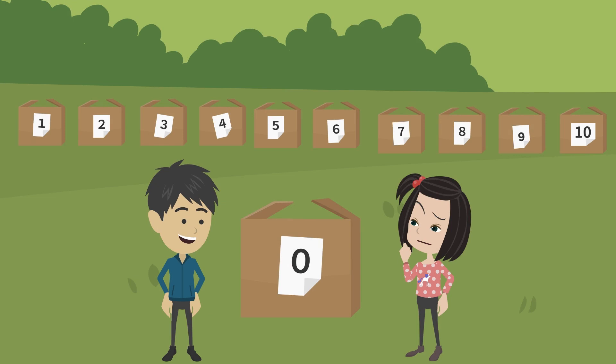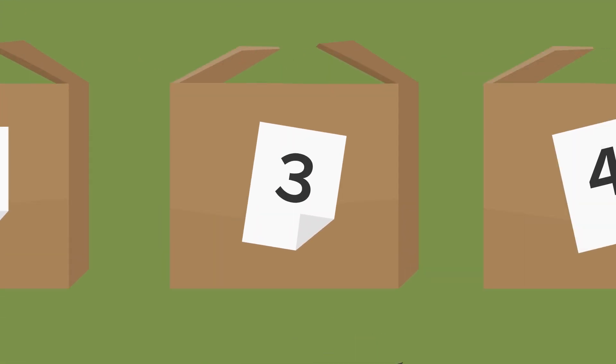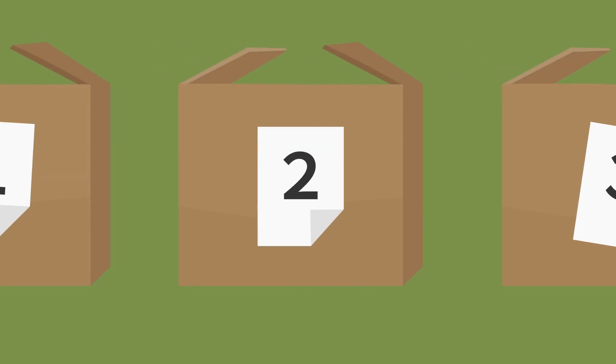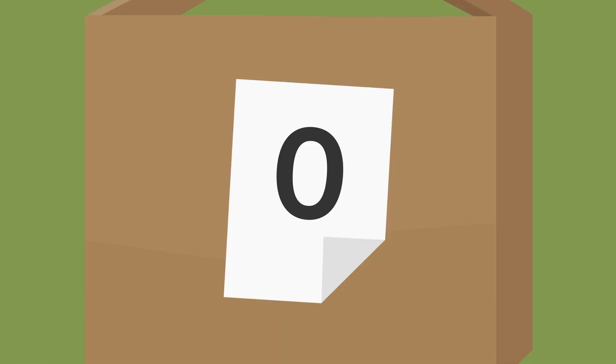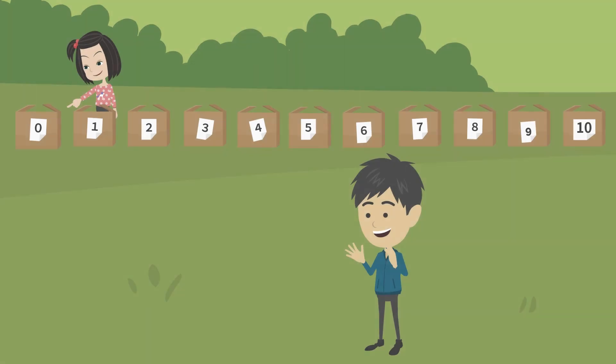So where should we put this box with 0? The number smaller than 3 is 2. The number smaller than 2 is 1. And 0 is the number smaller than 1. Then this box should be placed to the left of the box with 1. Okay, let's count again.